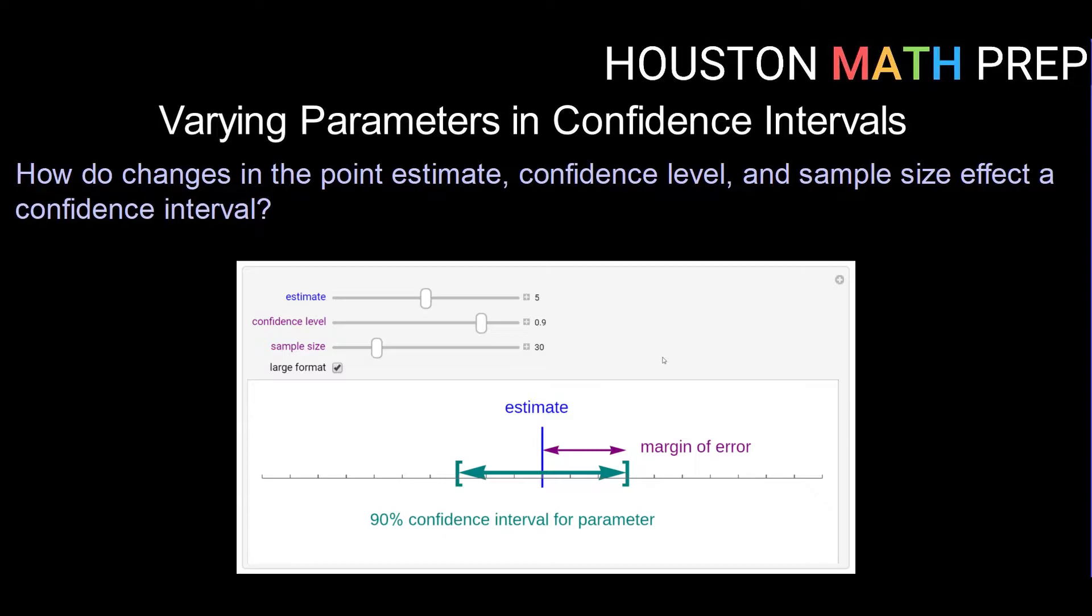And that margin of error is dependent upon the confidence level and our sample size. So I want to look at what happens if we change the confidence level, what does that do to our confidence interval, and also what happens if we change our sample size. So we're going to vary those one at a time.